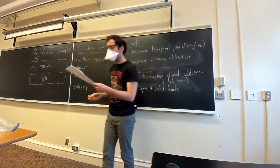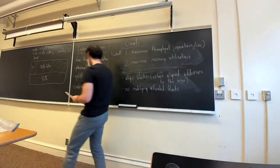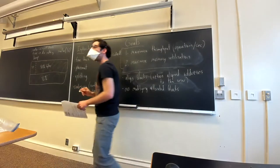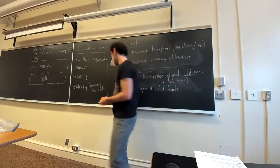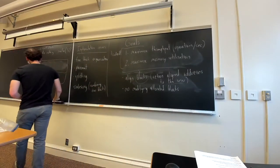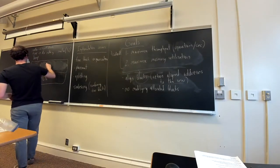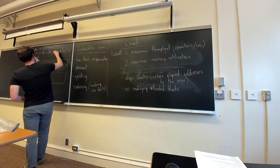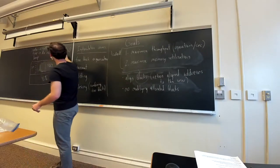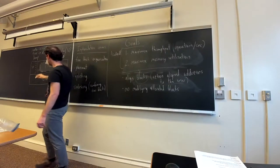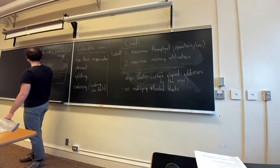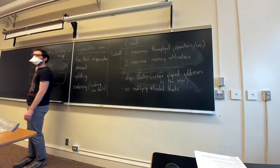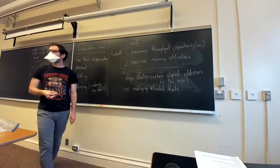Our last implementation issue is coalescing — combining free blocks. In a situation where we split off 32 bytes and were left with 4064 bytes, if later the 32-byte block is freed, we now have a free block of 32 and a free block of 4064. Coalescing is when and how we combine these, because we could instead have one larger free block of 4096.